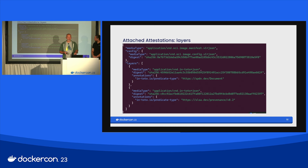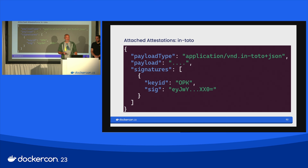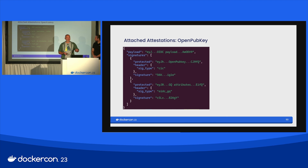Each of the attestations is stored as a layer in that image. It's a bit of a kludge, but it does work. There you can see the SBOM and the SLSA provenance. In the provenance attestation — you can see right there we've called it OPK, that's OpenPubKey. And drilling down further into the signature, here we've got the OIDC payload with the signature stripped, we've got the OpenPubKey signature, and we've got the GQ proof — which should look very much like Ethan's slide.